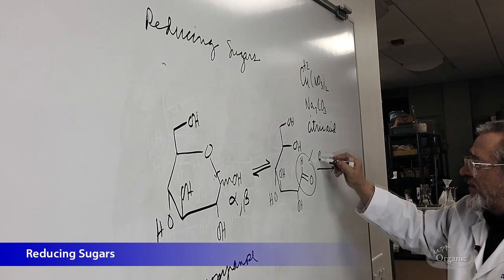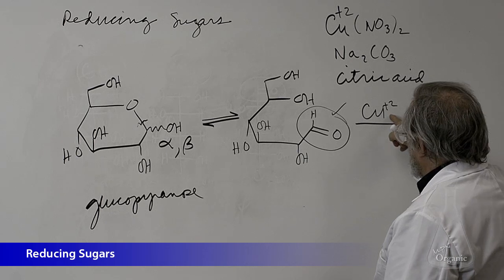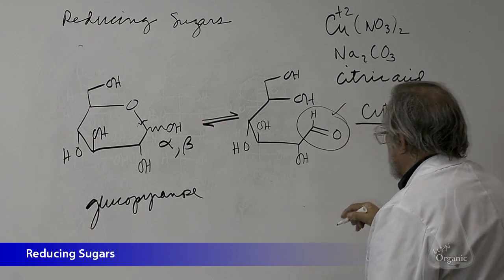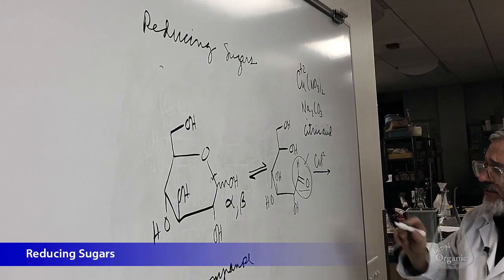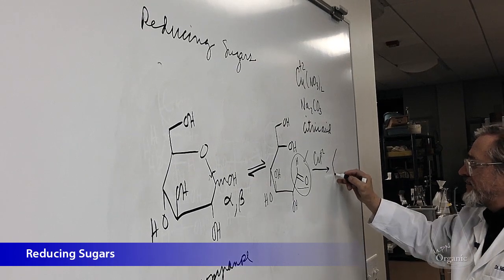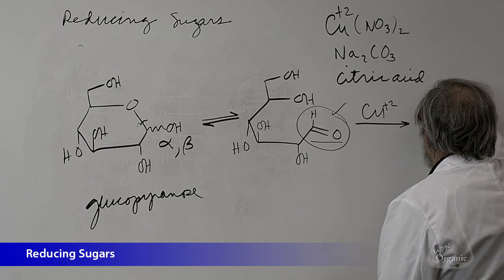So that when copper plus 2, which is going to be our oxidizing agent, reacts in Benedict's solution with this molecule, and we know that the aldehyde is an easily oxidized functional group. What you get then is this particular reaction.